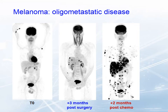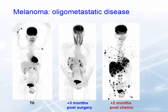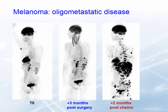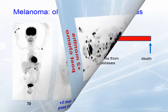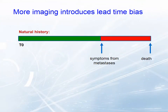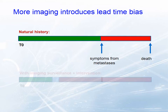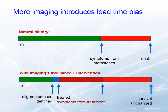This is five months from time zero to death, and I just wonder what would have happened if this patient was observed and systemic therapy applied at a later time point. If this is the natural history of a tumor from time zero to death, with symptoms from metastases occurring here and the symptomatic proportion of life in red — with imaging surveillance and intervention, we do have potential to do harm by identifying an oligometastasis, treating it, making the patient symptomatic from our treatment, and then they develop symptoms from metastases anyway, with unchanged survival but a lengthened overall period of morbidity.